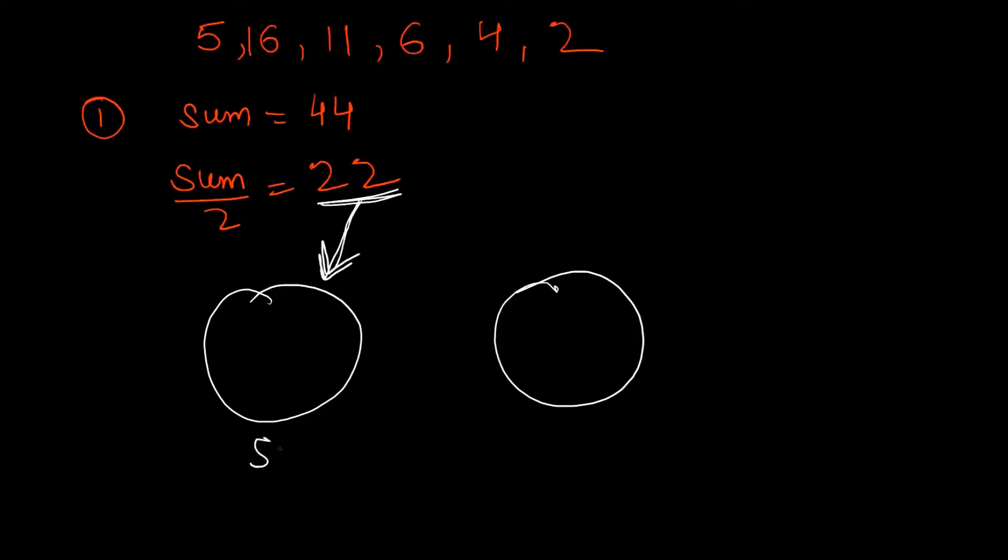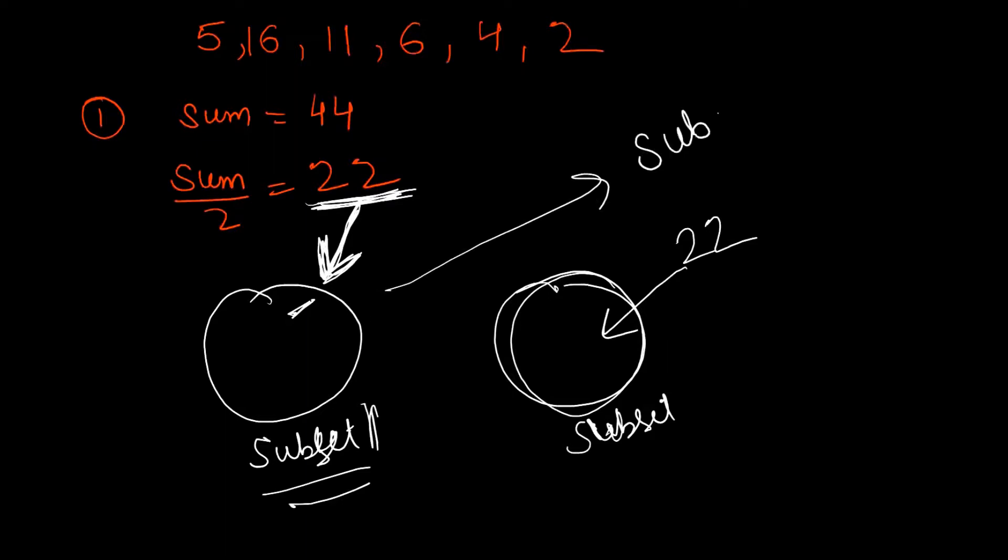If this 22 is present over here, then the rest numbers which are also 22 will be there in the second subset. This 22, whether it is present in subset 1 or not, this will be solving with the help of subset sum. So here we'll be taking help of this subset sum code and we'll be adding few lines to this subset sum problem so as to solve partition problem.